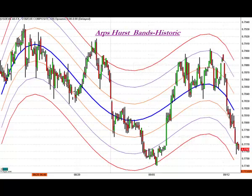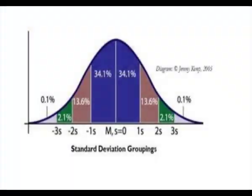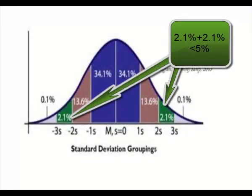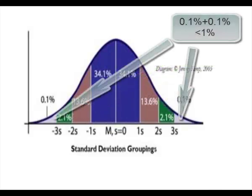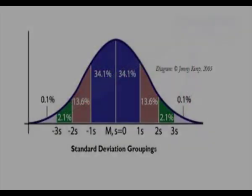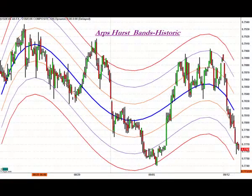Statistically, there is only a 5% chance that prices will exceed the 2 sigma and less than a 1% chance that they will exceed the 3 sigma line. So when prices reach these bands, a relatively low-risk entry opportunity presents itself to trade in the opposite direction of the current move.